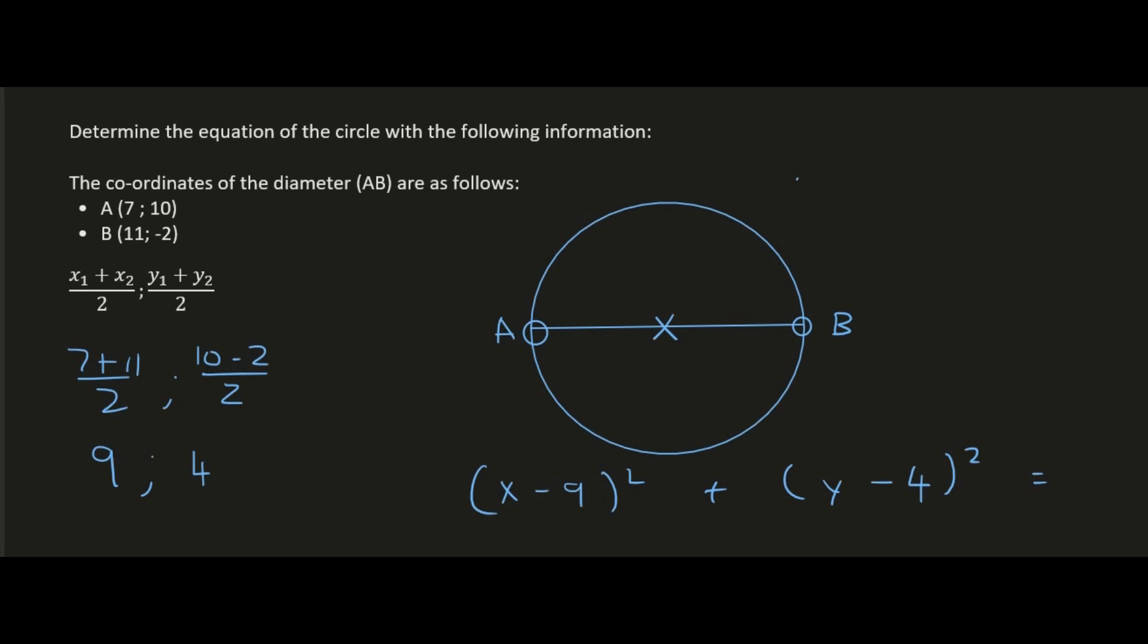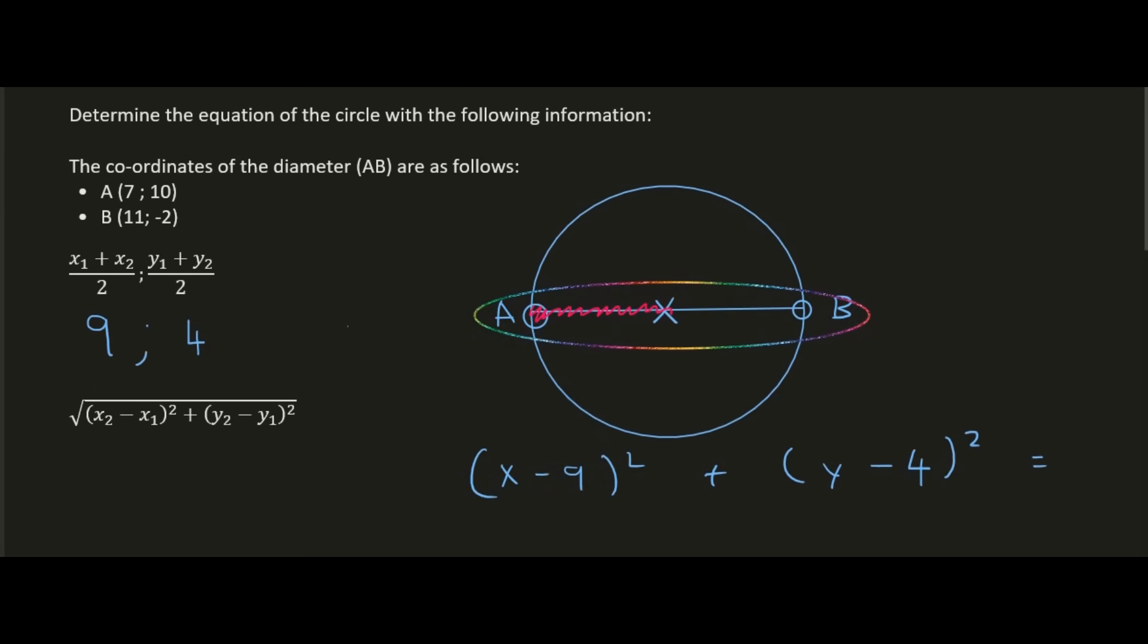If we could work out the length of AB using the distance formula, then we could just divide that by 2 because that would be the radius. We use the distance formula between A and B. Starting with A's coordinate, it would be the square root of (7 minus 11) squared plus (10 minus minus 2) squared, so 10 plus 2.